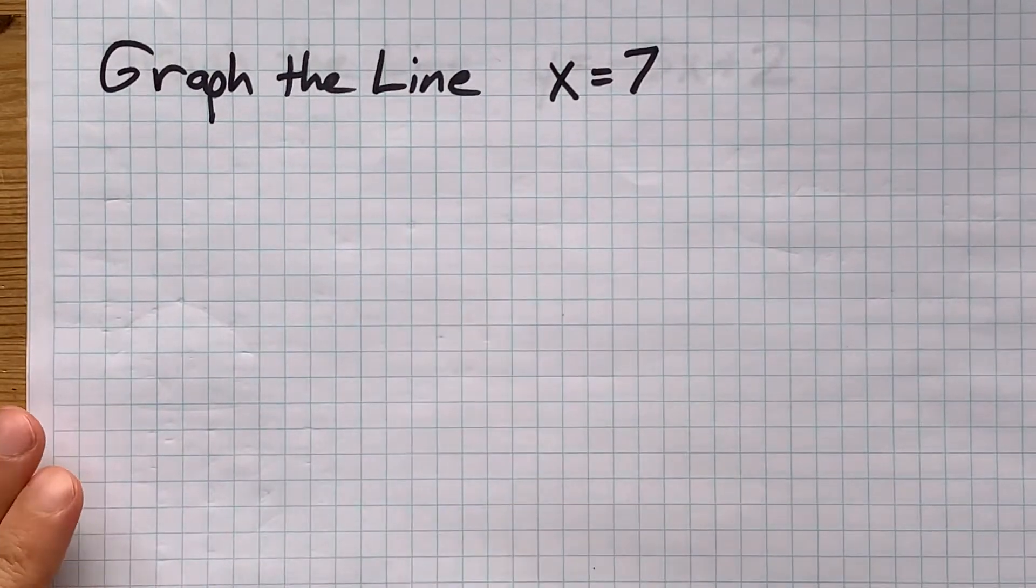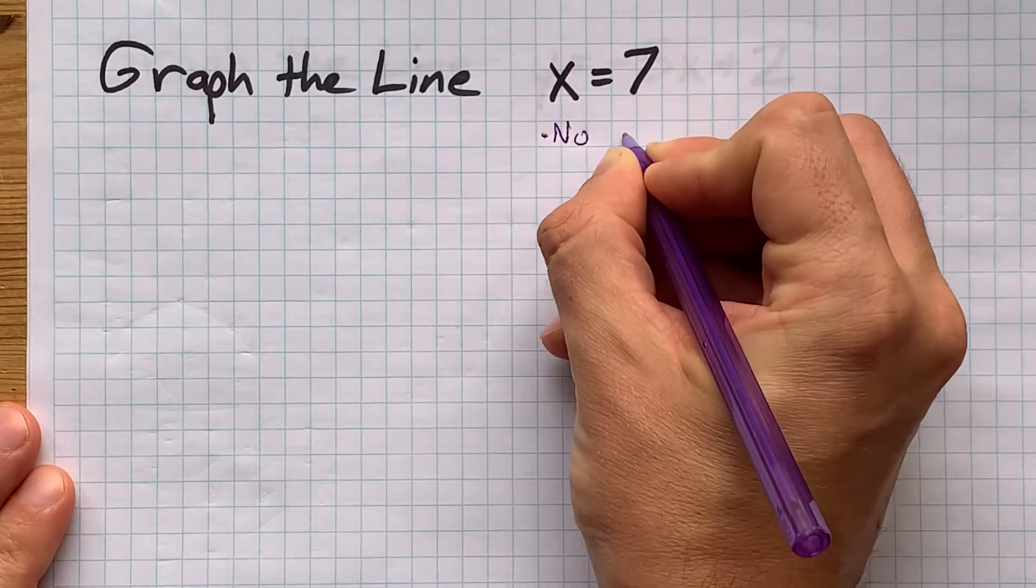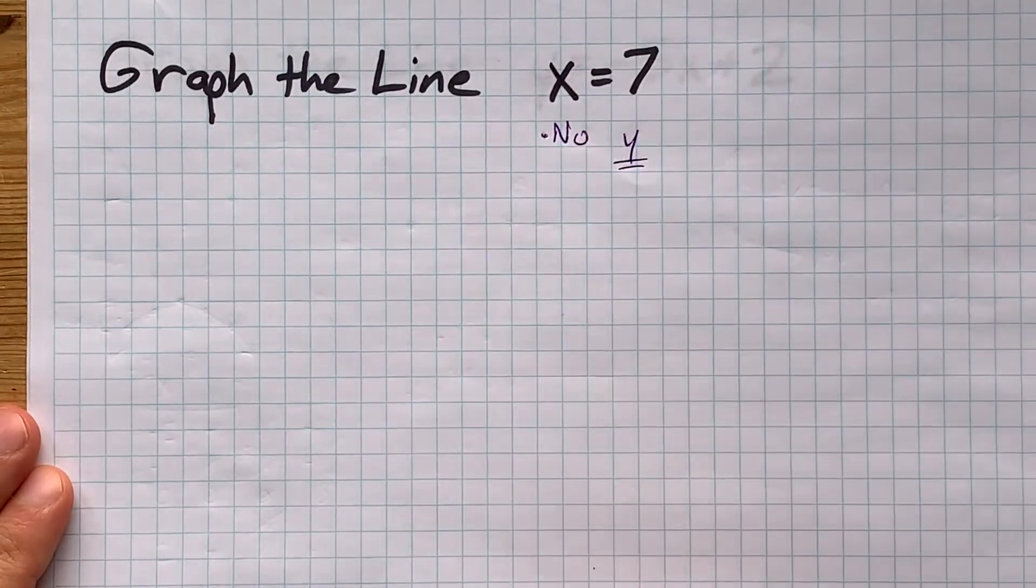How do you graph the line x equals 7? The first thing I want you to note is that there is no y in this equation at all.